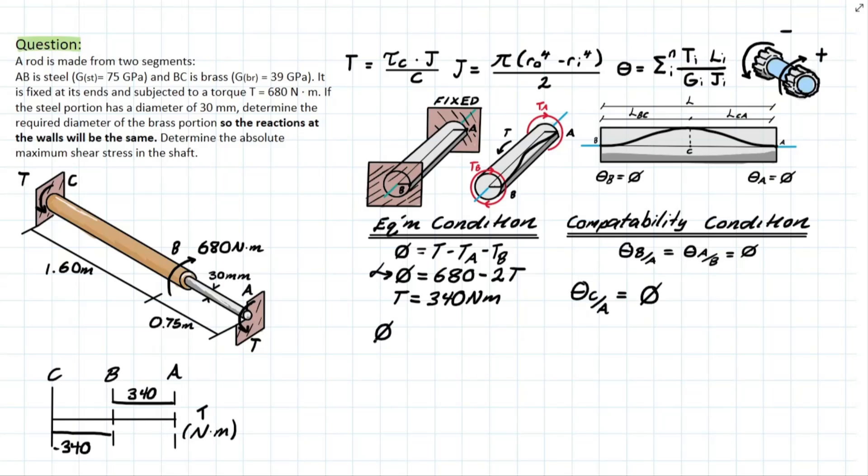So if you write this down, the angle of twist is equal to zero when we have the torque between CB times the length of CB over the shear modulus of the brass times the polar moment of inertia of the brass. Once again, this is the resistance to torsional distortion and is related to the radius or the diameter of the member, so this is the variable that's important for this problem.